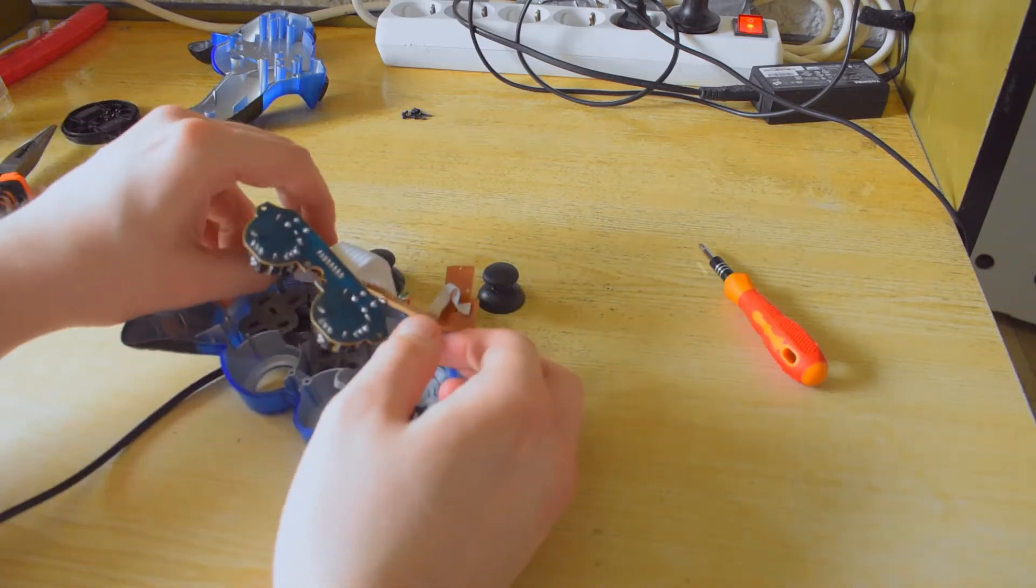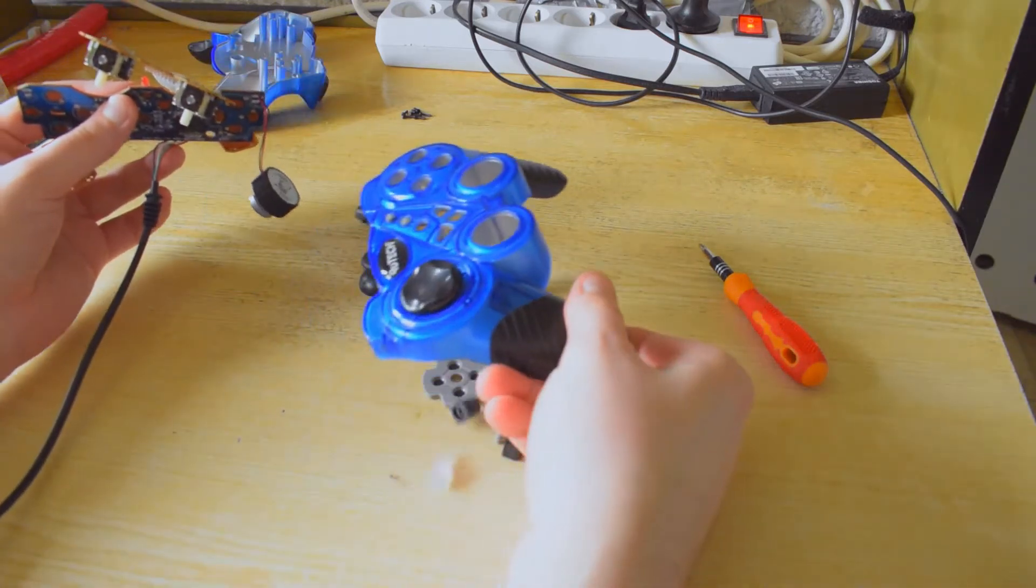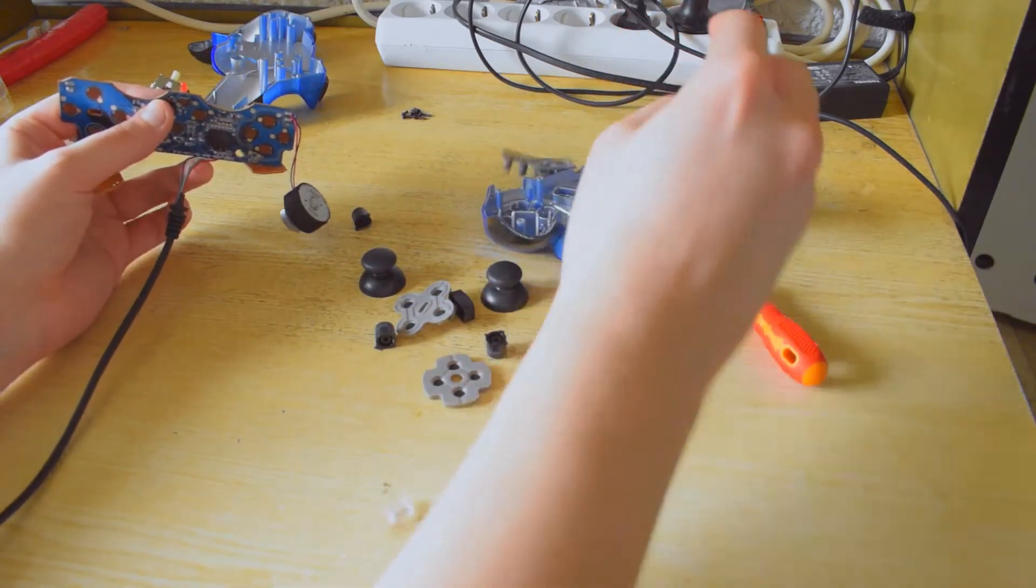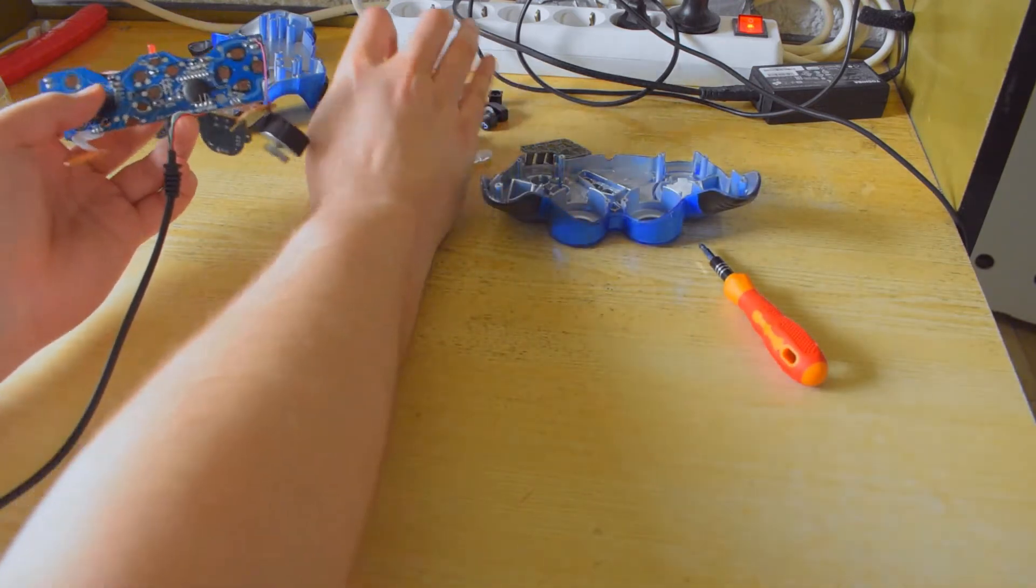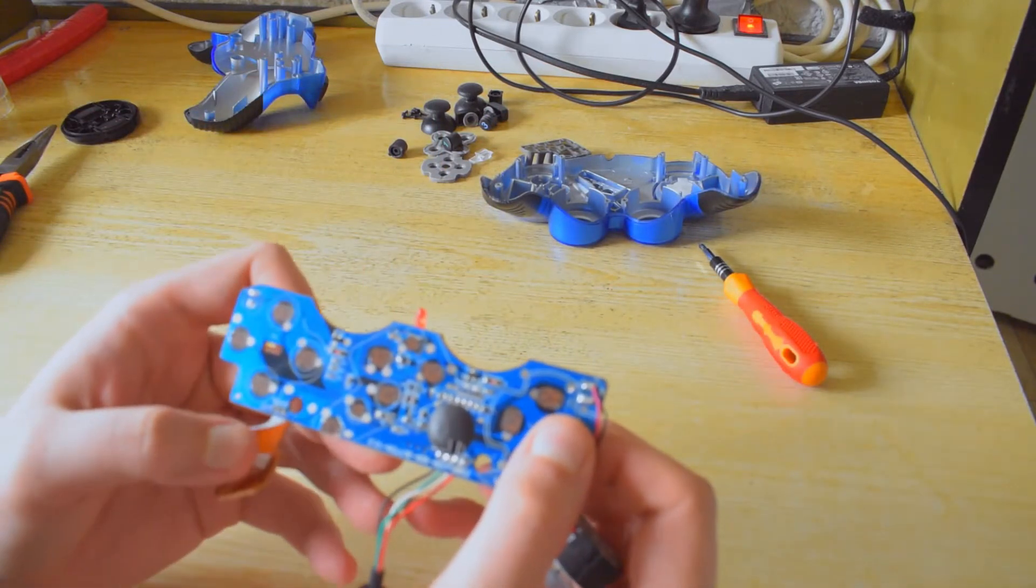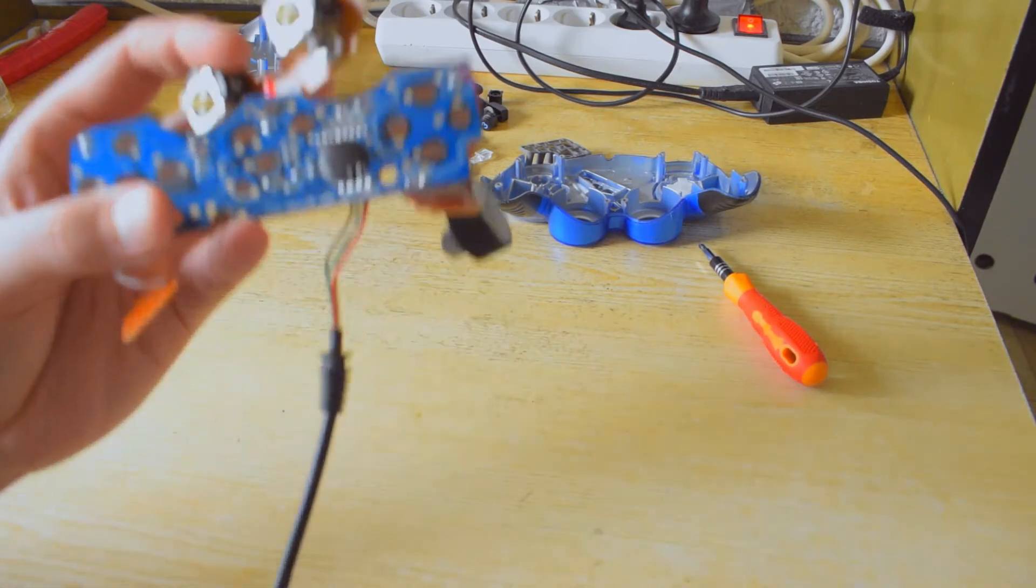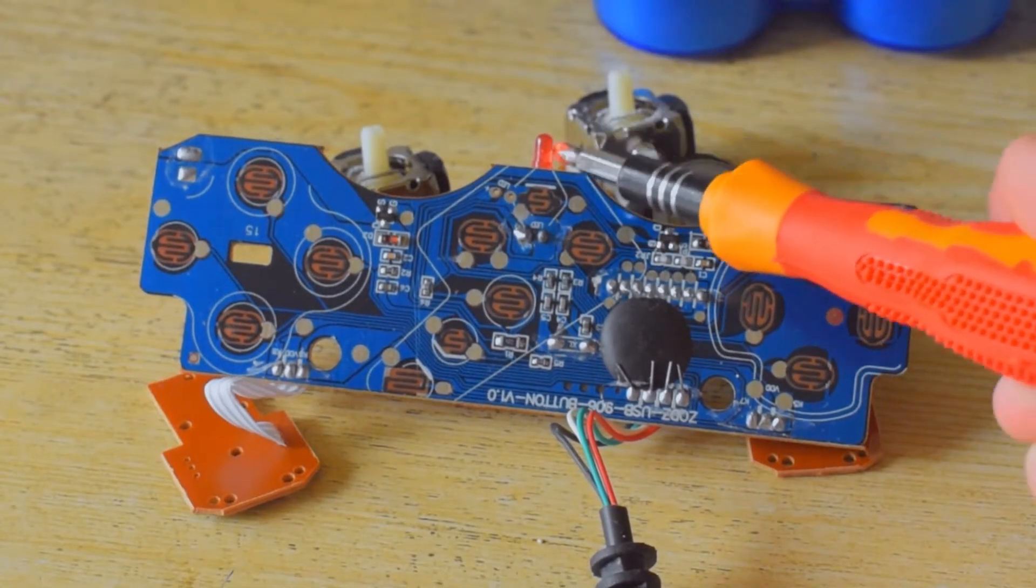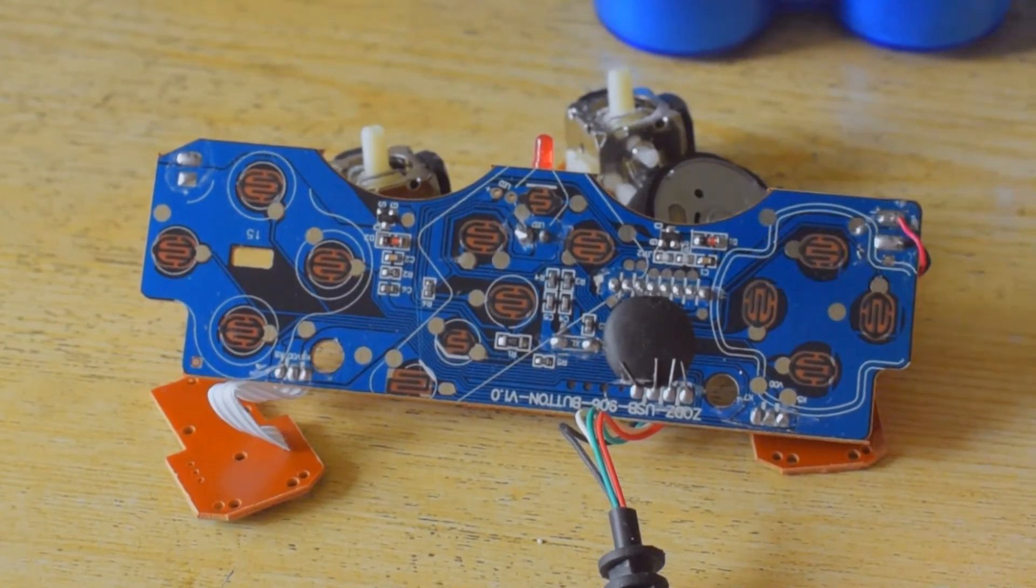The motor board. Okay, so this is basically what a gamepad is - a bunch of buttons, a bunch of rubbery buttons. Wow, this circuit board is naked.